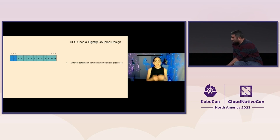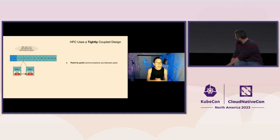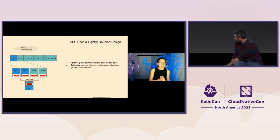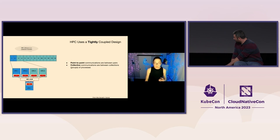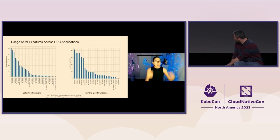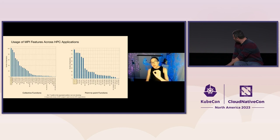There are different patterns of communication. We'll talk about two families today: point-to-point and collective calls. Point-to-point communication is a send and receive — one CPU sends a packet of data to another one. The second pattern is collective — communications between collections or groups of processes. Here you see MPI Sum, like MapReduce, where you start with a bunch of numbers and reduce them to one sum. The most common collective call is MPI AllReduce, which adds an MPI broadcast to send data out to more than one CPU. MPI AllReduce is the most popular collective call, and send/receive are the most popular point-to-point functions.